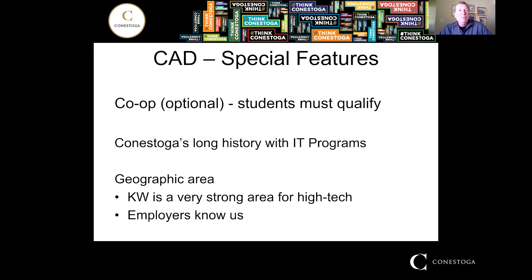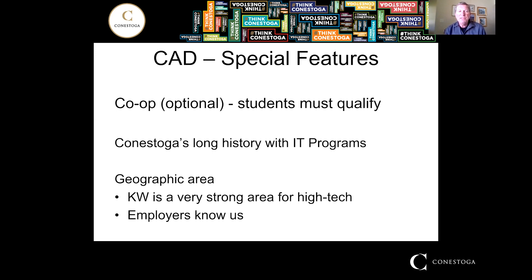What special things are there about the CAD program? It has a co-op option — a four-month work term. There are two semesters of courses, and for students who qualify — meaning sufficient grades — you get to do a co-op work term. The Kitchener-Waterloo area is a very strong area for high technology. Conestoga has been around since 1967, and the local employers know us. They are very happy to hire our students and grads.